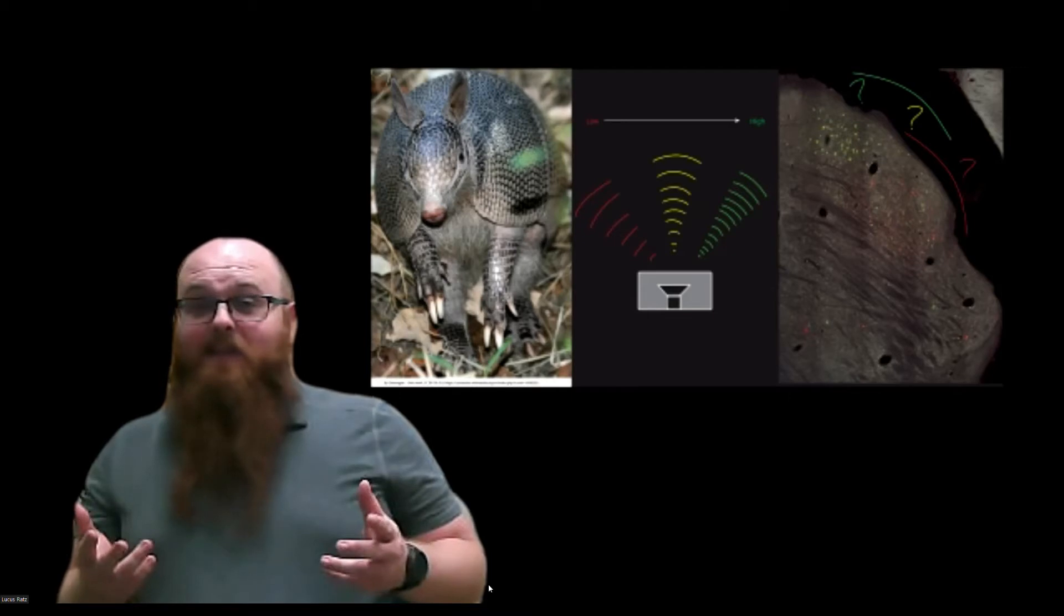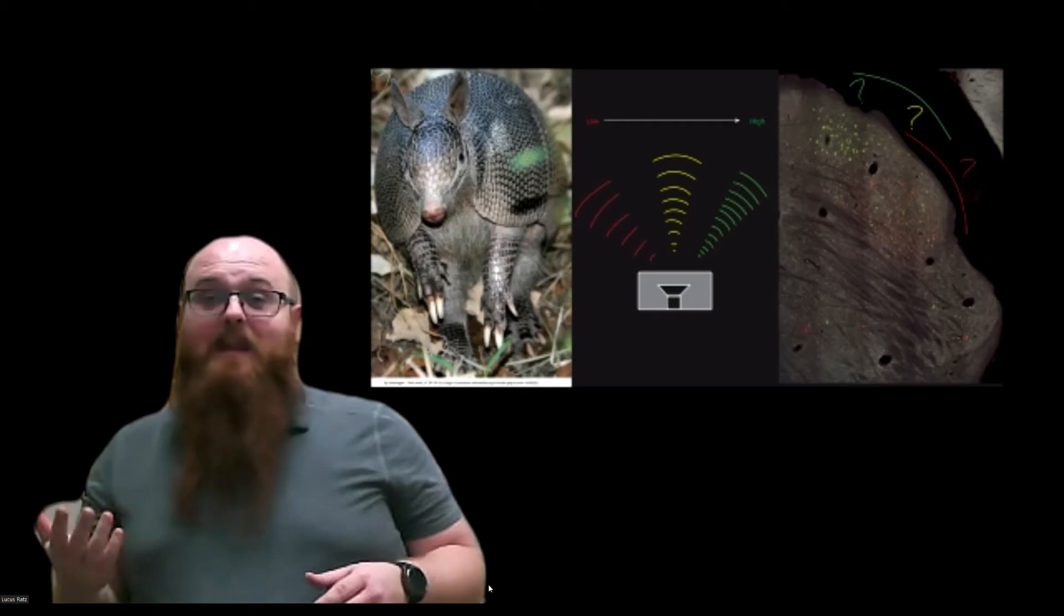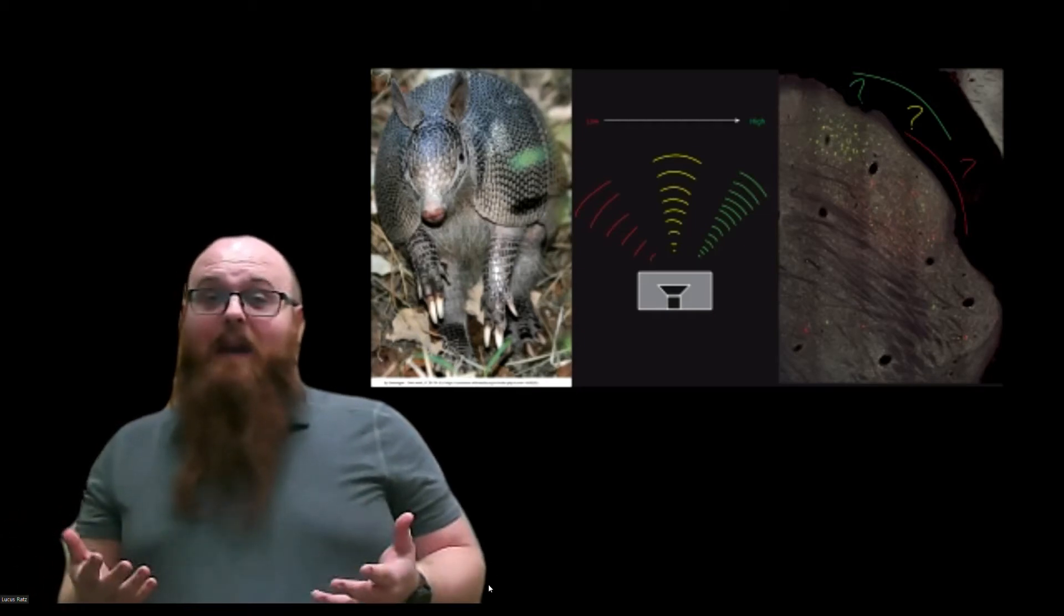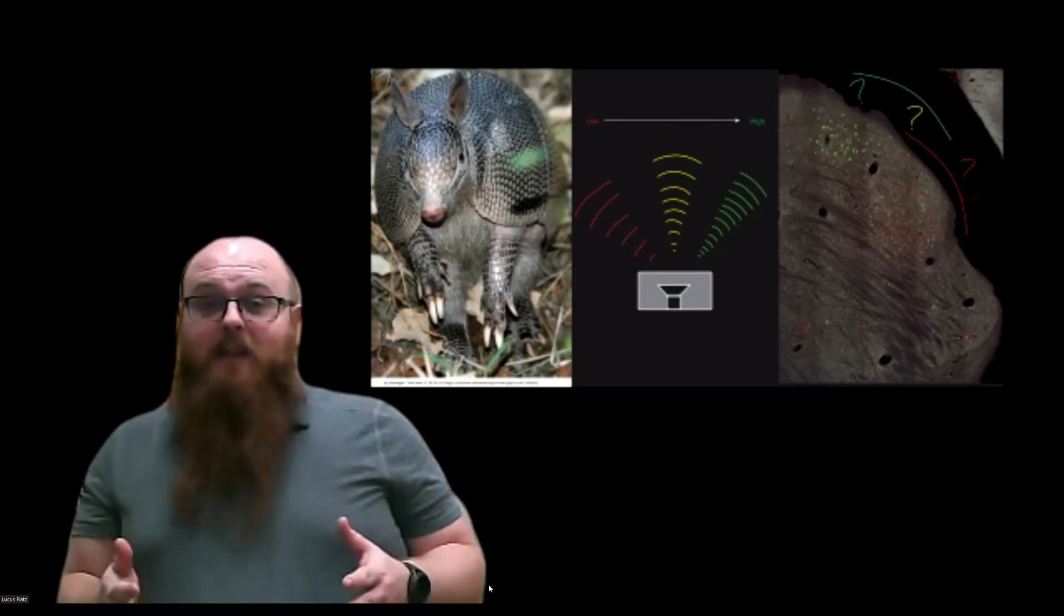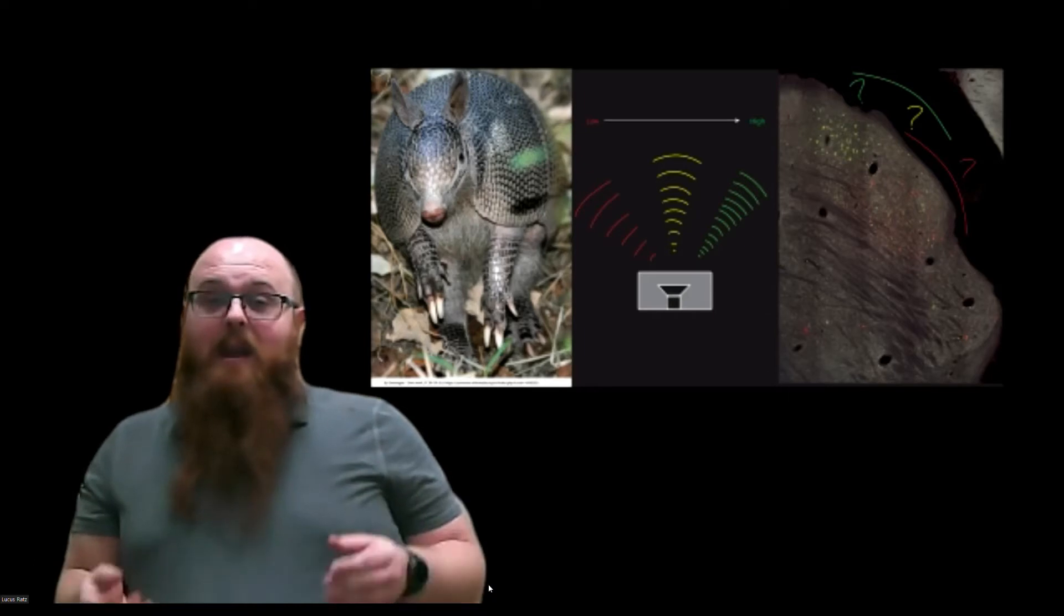Surprisingly, relatively few studies of their nervous systems are available, and this is in part due to their rarity and some of the species being on the endangered species list. So our lab was headed into this project with two goals. One was to characterize the connections of hearing-related structures in a Xenarthran brain, and then two was to compare those to other species.